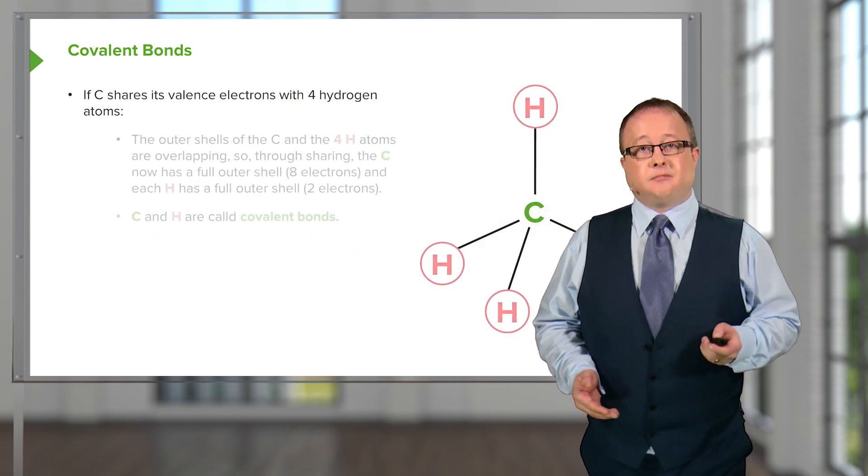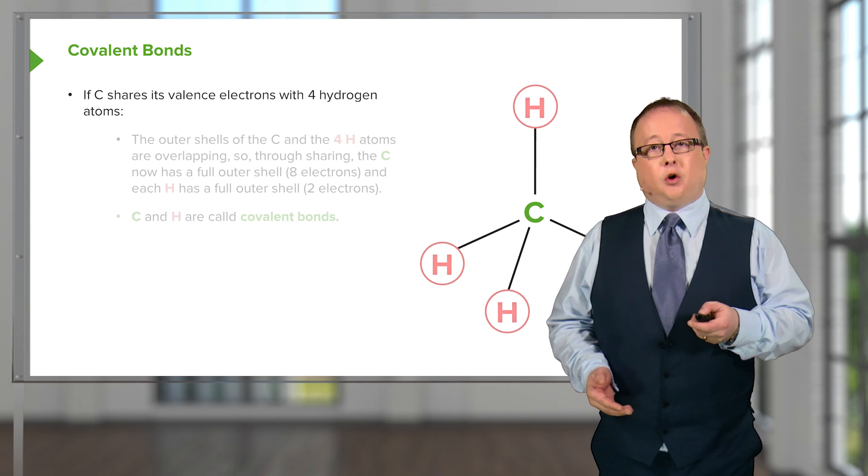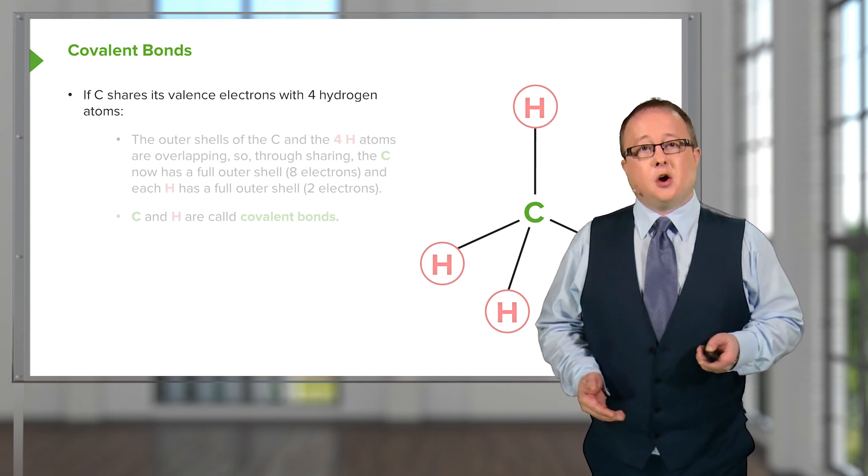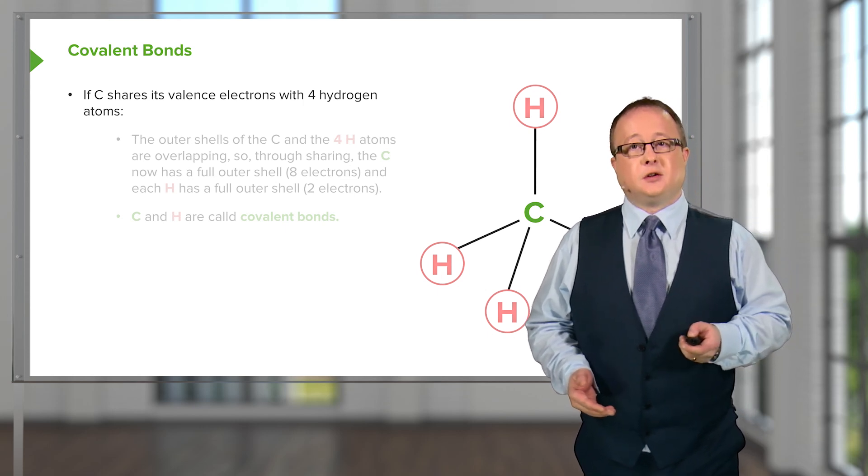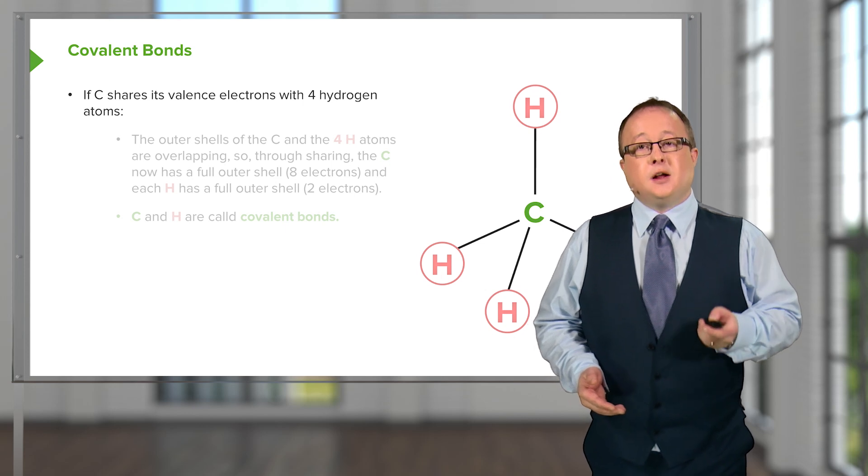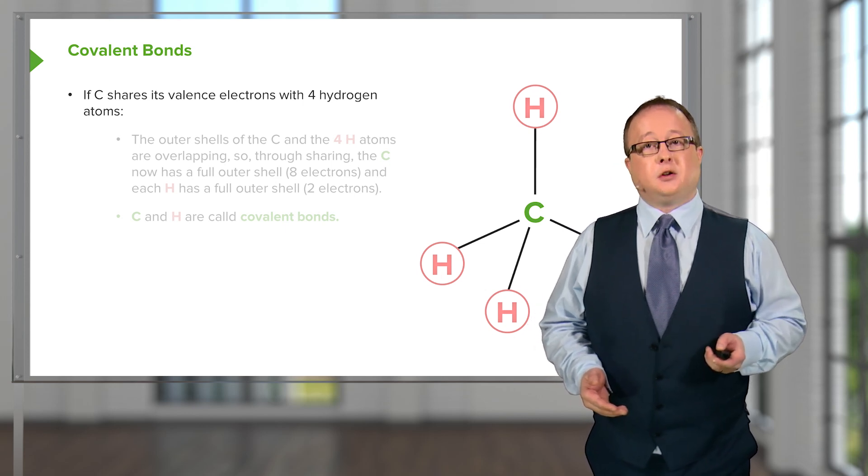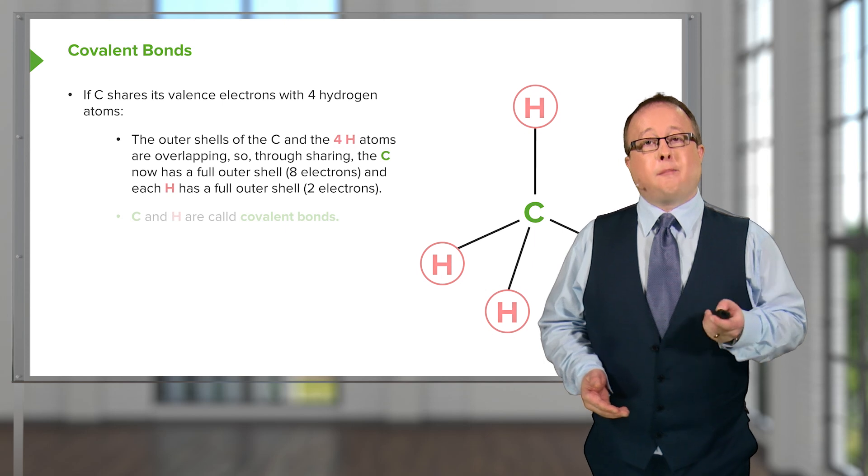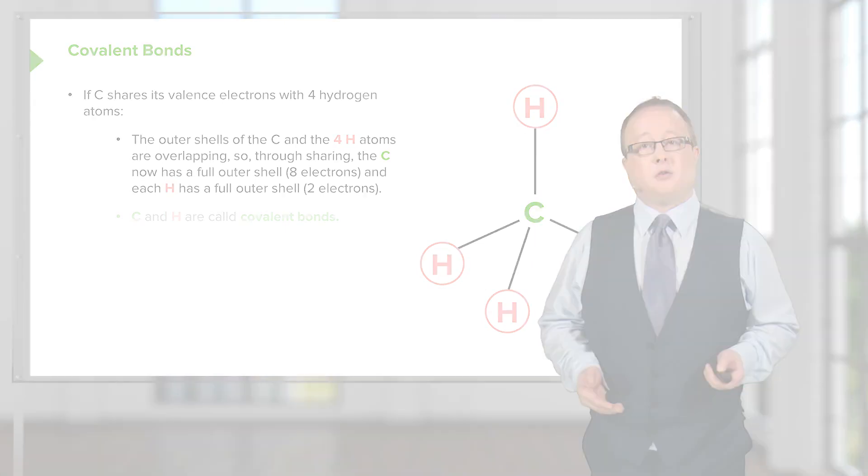So if carbon shares all four of its valence electrons with four hydrogen atoms, such as shown here, this enables the completion of the outer shell for both sets of atoms.